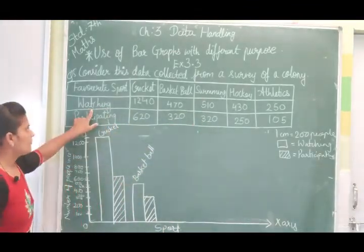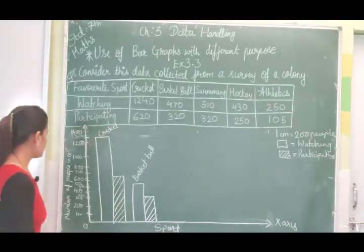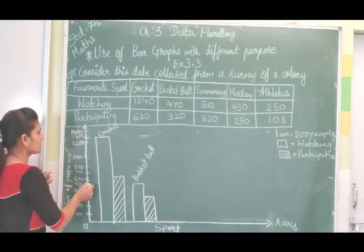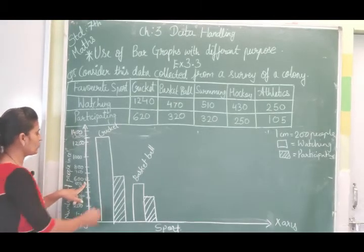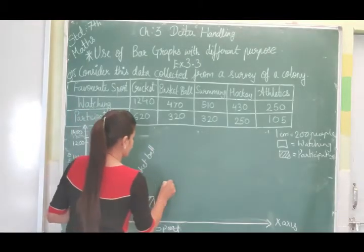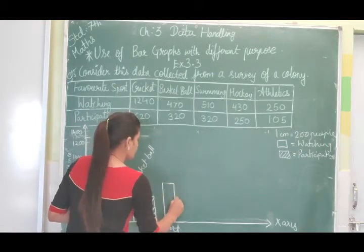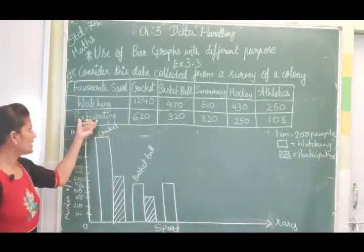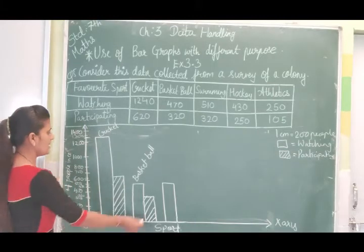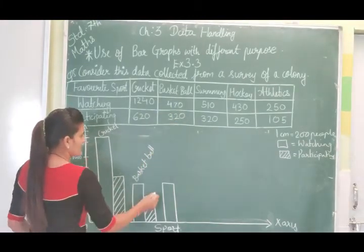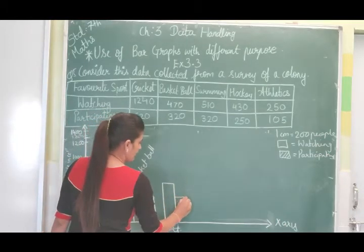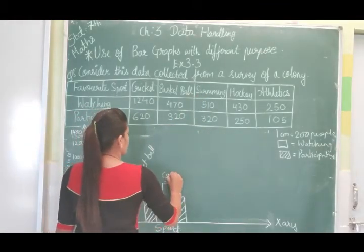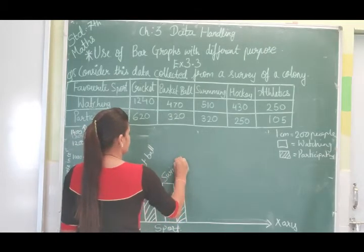For swimming watching, it is 510 — between 400 and 600, midpoint is 500. Go one step above 500 to get 510. Draw the plain bar. For swimming participating, it is 320 — same as basketball's participating bar, so equal in height. Draw the shaded bar. Both bars together represent swimming — write 'swimming' below.